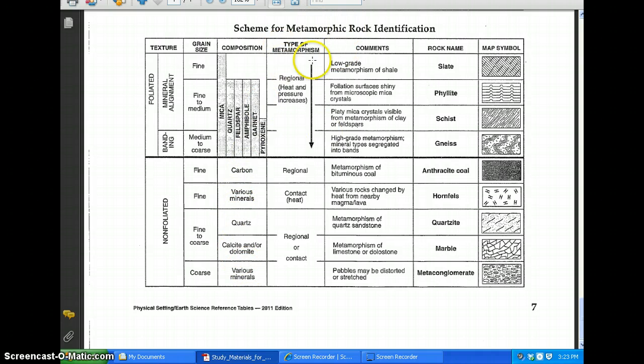Then we have the type of metamorphism. The foliated rocks happen due to regional metamorphism, or they form because their parent rock underwent regional metamorphism.